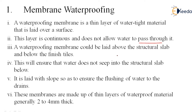Your basic slab is there, above which the membrane is placed, and again the final layer of finished tiles can be laid. This will ensure that water does not reach the structural slab — first the protection of tiles, then the membrane protection, and then your basic slab. It is laid with slope so as to ensure the draining or flushing of water will flow to the drains, reducing the chance of water ingress.